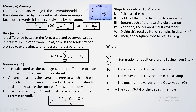Coming to variance — it calculates the average squared difference of each number from the mean of the data set. This is the difference between each observed value and the mean, squared, then averaged. So: difference, then squared, then averaged — that is the average squared difference of each number from the mean, which we call variance. It measures the average degree to which each point differs from the mean. It can also be derived from standard deviation — squaring the standard deviation gives the variance.